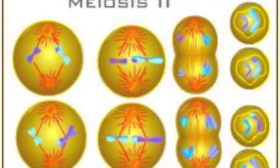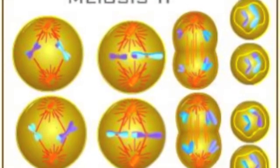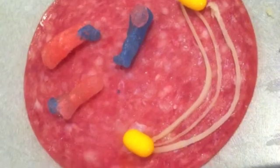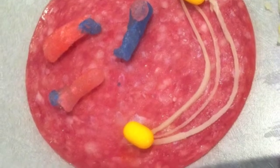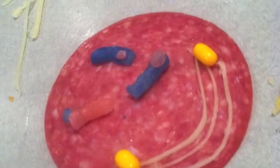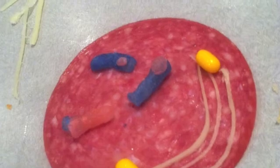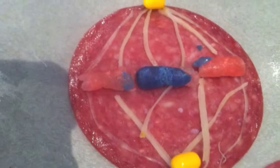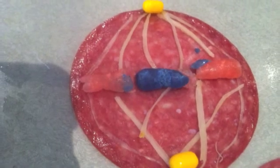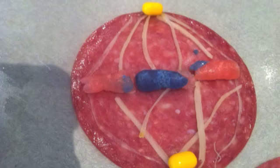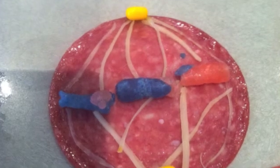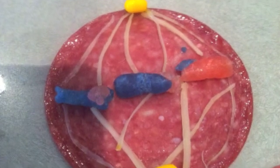After meiosis I is completed, the cell must separate the sister chromatids in the daughter cells. This begins the process of meiosis II, also known as separating sister chromatids. The first part of meiosis II is prophase II: the spindle apparatus forms and the chromosomes in each daughter cell move towards the metaphase II plate. In metaphase II, sister chromatids are non-genetically identical because of the crossing over that occurred in meiosis I. The sister chromatids align along the metaphase II plate.